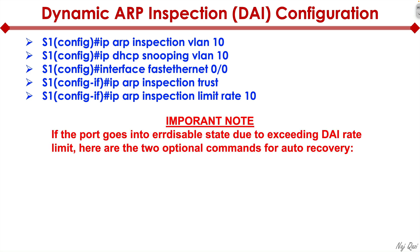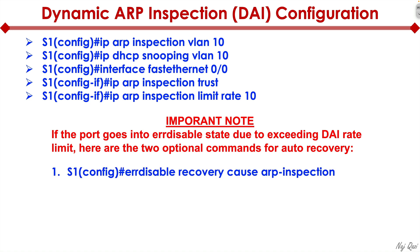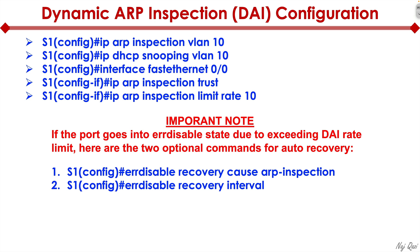Important note: if the port goes into error-disabled state due to exceeding the DAI rate limit, there are two optional global config commands for auto recovery. Type 'errdisable recovery cause arp-inspection', and follow that with 'errdisable recovery interval' and a number specifying the number of minutes after which the port will automatically be re-enabled.